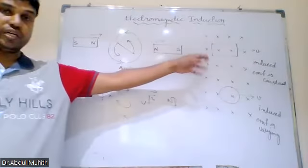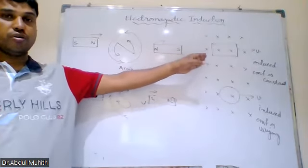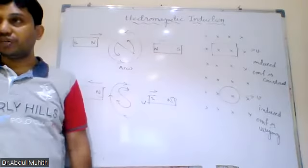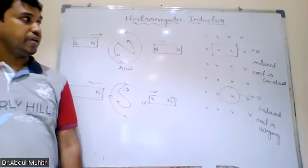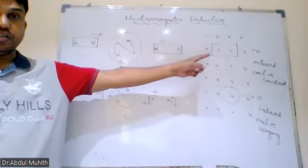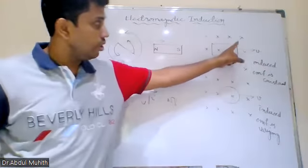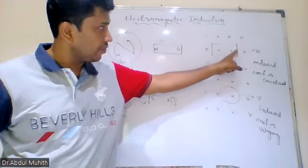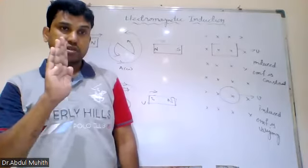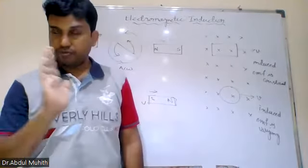In the second case, the induced EMF is varying. Can you tell me why? In the first case, current is induced in both the cases. It will be South pole and clockwise because both are leaving the field — but the key difference is important.